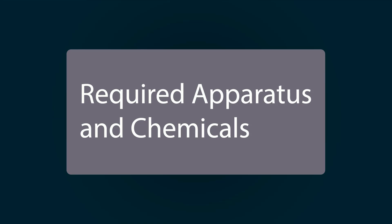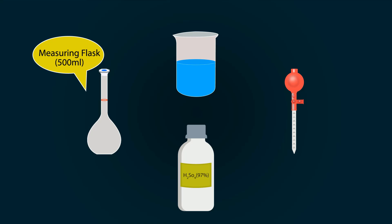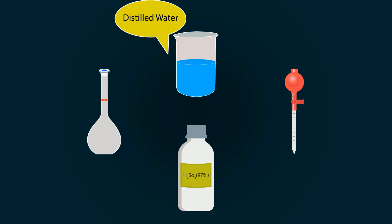The required equipment and chemicals are: a 500 milliliter measuring flask, distilled water in a beaker, a pipette, and H2SO4 which is sulfuric acid.